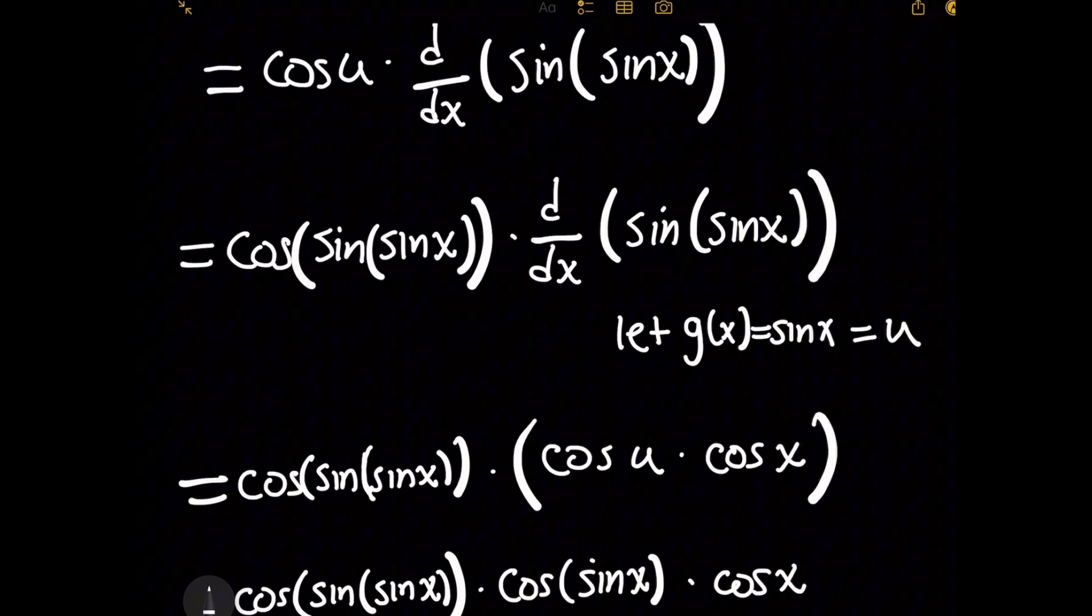I'm going to just basically substitute back in sine of sine of x for u, giving me the cosine of the sine of sine of x, multiplied by this derivative of sine of sine of x, where for that we need to again apply the chain rule.